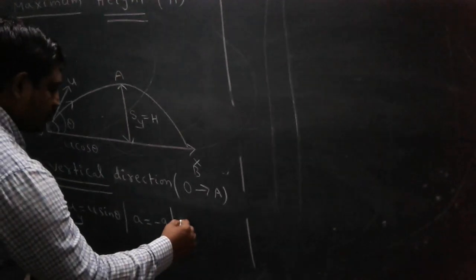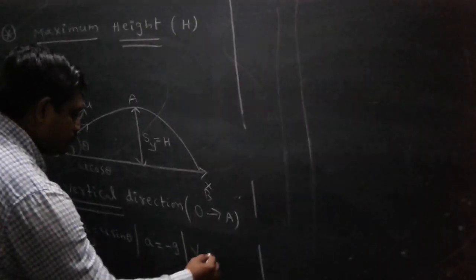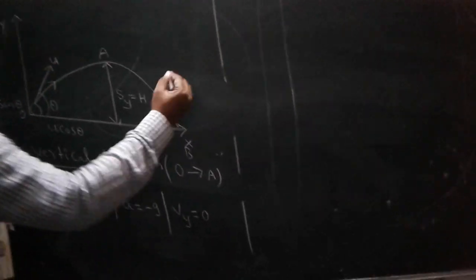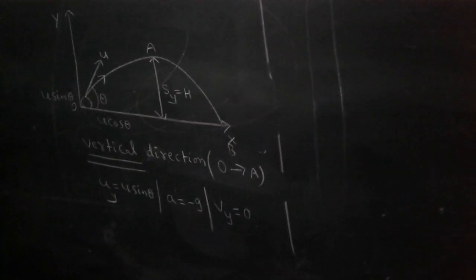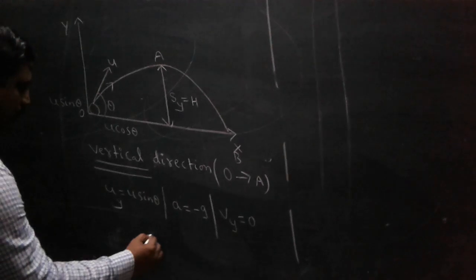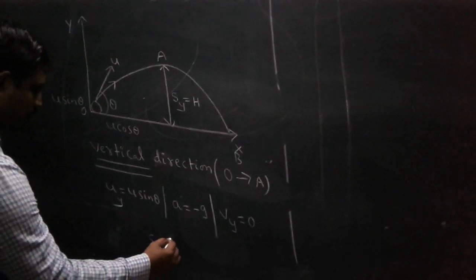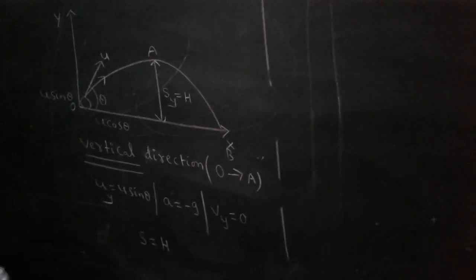at A, what is the vertical velocity? Zero, because that is the maximum height. From O to A, what is the vertical displacement? H.